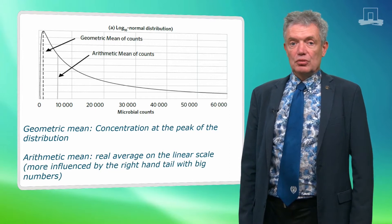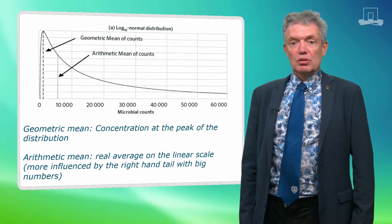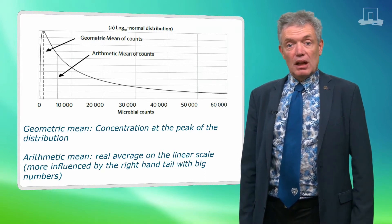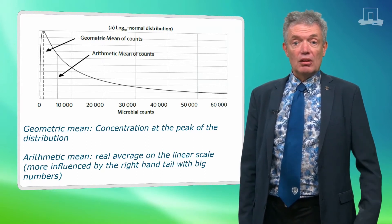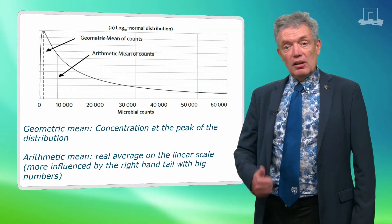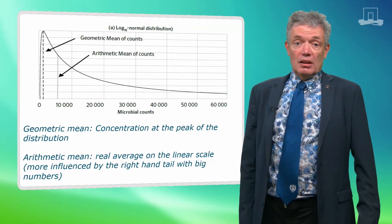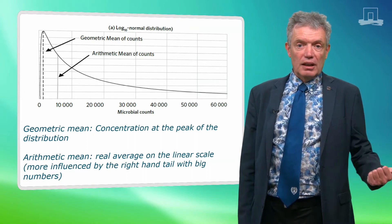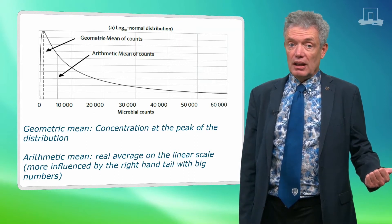This can be further understood if we plot the log-normal distribution with the x-axis on the linear scale. Then we see that without this log transformation the distribution has a long right hand tail and the geometric mean is far left in the curve. The arithmetic mean, the real average of the numbers, is much more to the right, being more influenced by the right hand tail.